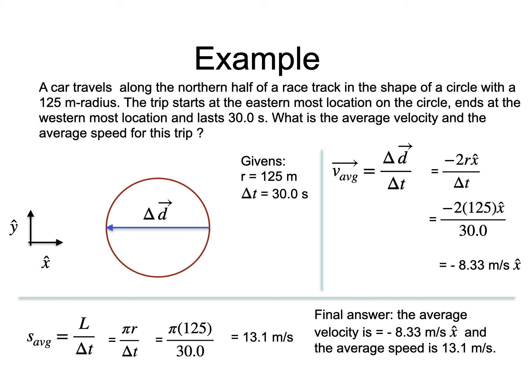The final step is to summarize our results. This concludes the lecture about the average velocity and the average speed. We will next look at what happens when the time interval becomes infinitely small. This will be the subject of the next installment.